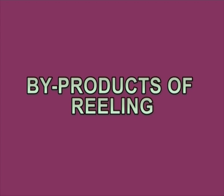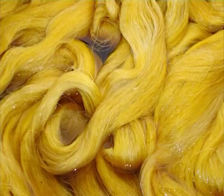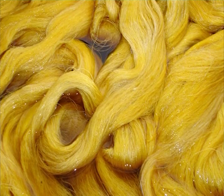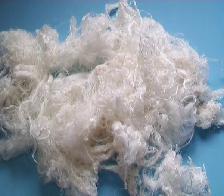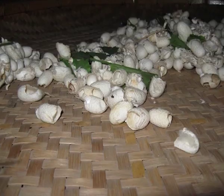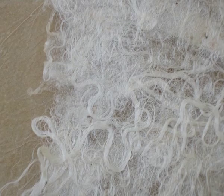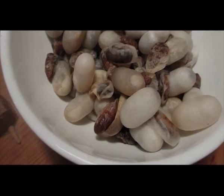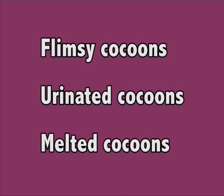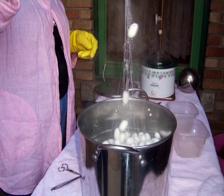By-products of reeling: On average, about 35% by weight of raw silk produced in the reeling industry constitutes waste. It is classified into three types: waste from cocoons, reeling waste, and thread waste. Waste from cocoons prior to reeling includes cocoons discarded in the reeling unit and the floss obtained during cocoon brushing. Discarded cocoons include flimsy cocoons, urinated cocoons, melted cocoons, double cocoons, and flossy cocoons.